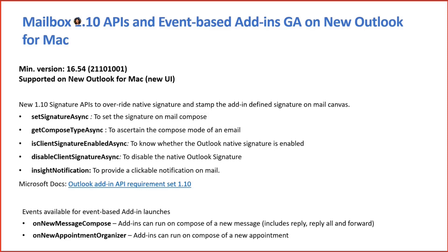There are two known issues on Mac for the event-based add-ins: if a Signature API passes HTML in a complex form, it was causing the API to break; and there was also an issue with the clickable info bar not working in certain scenarios. We've checked in the fixes, and in the January production release — coming up early next week — you should see those working fine. Please update to the latest builds and test your add-ins.